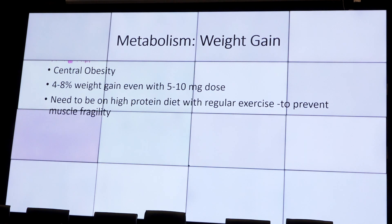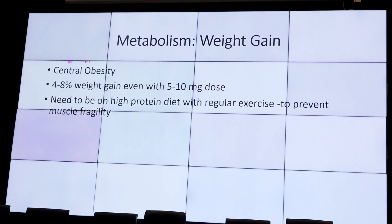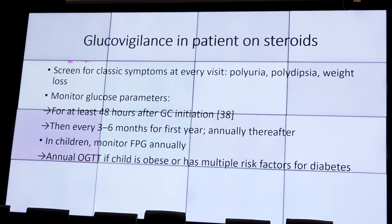Always remember, steroids cause weight gain, and patients will have mechanical issues — difficulty walking, weak muscles, weak bones. Counsel the patient to follow a diet. A patient on steroids must be protein replete. During COVID, starting patients on a protein-rich, low-carbohydrate diet not only helped them cope better but also helped manage glucose levels better. Ensure at least 1 gram per kilogram of protein for patients on steroids, and tell them to exercise regularly to maintain muscle strength.